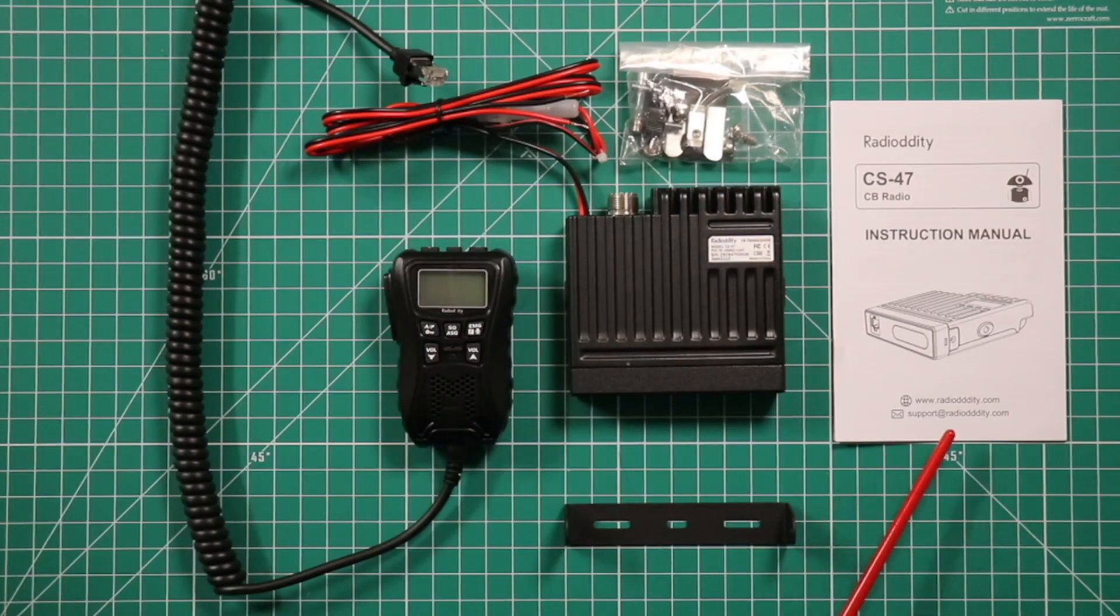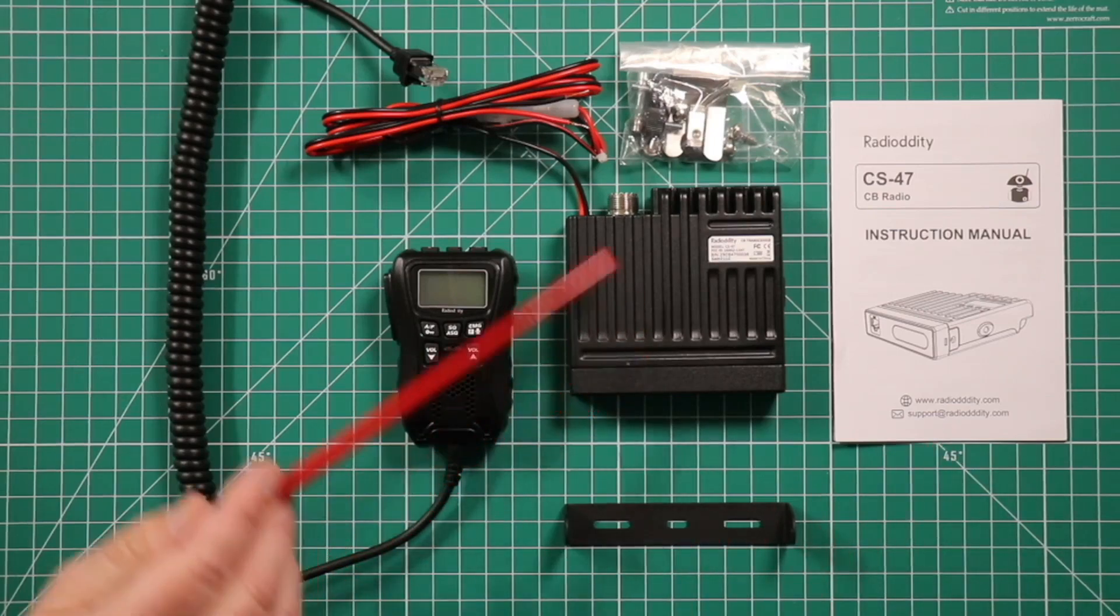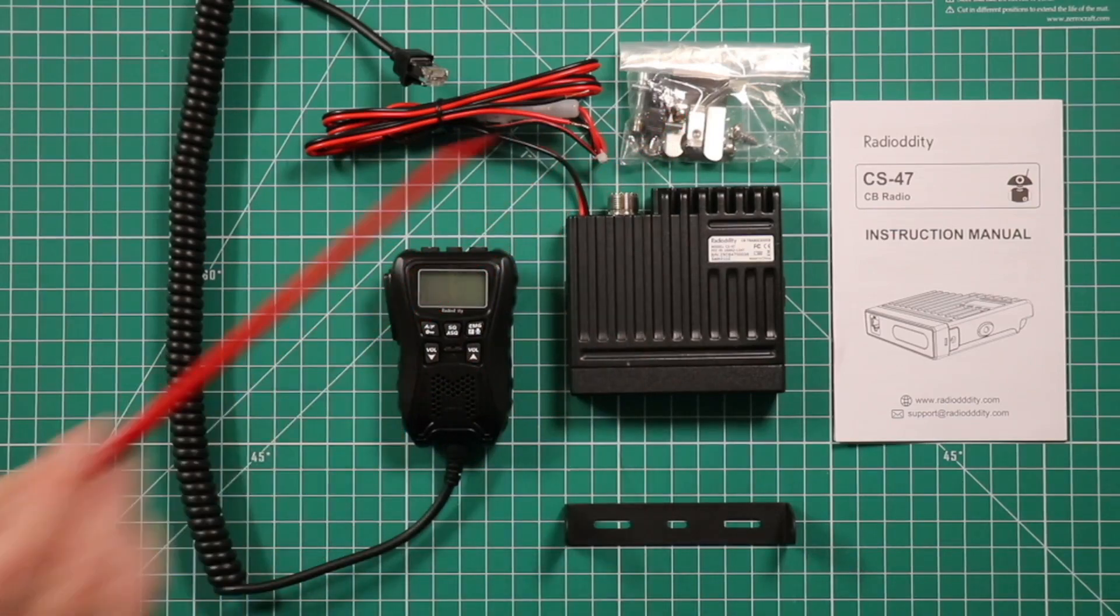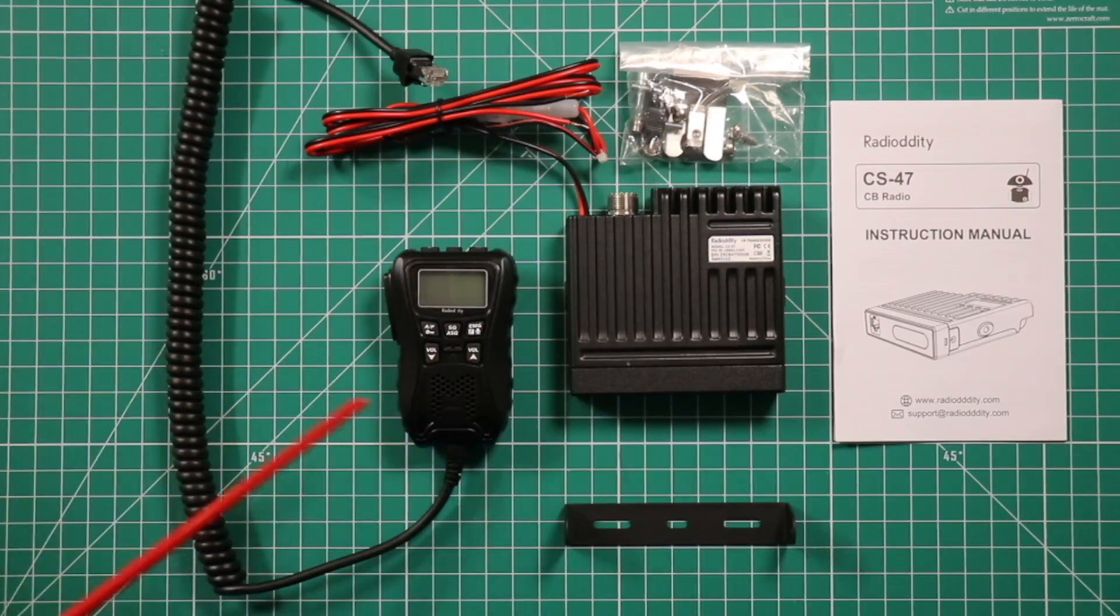The items that come in the box: the instruction manual, mounting bracket, radio body with attached power cord, and parts kit which includes the mic holder and the microphone itself.